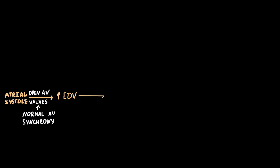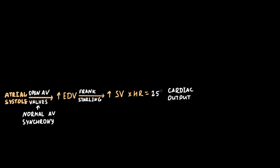Coming back to atrial systole: the corresponding blip in left ventricular pressure reflects the additional volume added to the ventricle from atrial systole. Atrial systole increases end-diastolic ventricular volume when atrioventricular synchrony is not impaired. By the Frank-Starling law, increasing end-diastolic volume increases stroke volume, which together with heart rate forms cardiac output. Atrial systole contributes up to 25% of cardiac output, and in cases of low ventricular compliance this index can rise to 50%. Both cardiac output and total peripheral resistance form the mean arterial pressure.